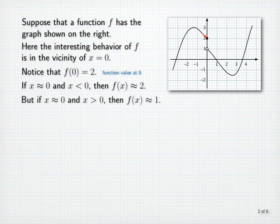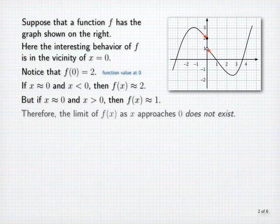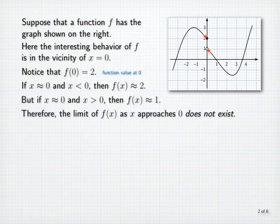But if x is close to and greater than 0, then f of x is close to 1. In fact, the closer x is to 0 while being greater than 0, the closer f of x is to 1. Therefore, there is no number that can serve as the limit of f of x as x approaches 0. That is, the limit does not exist. However, we can describe the behavior of f near x equals 0 in terms of one-sided limits.